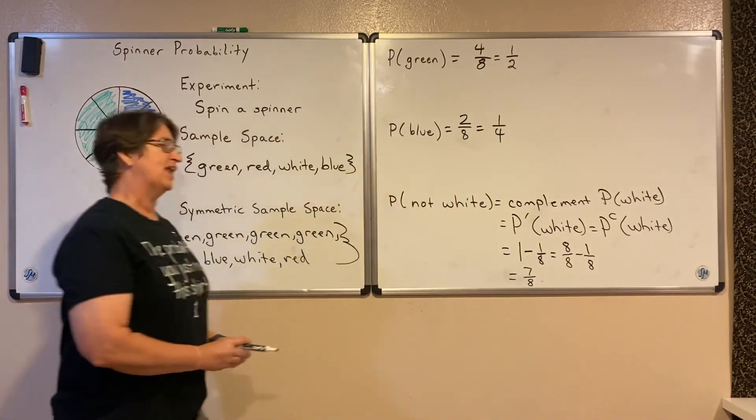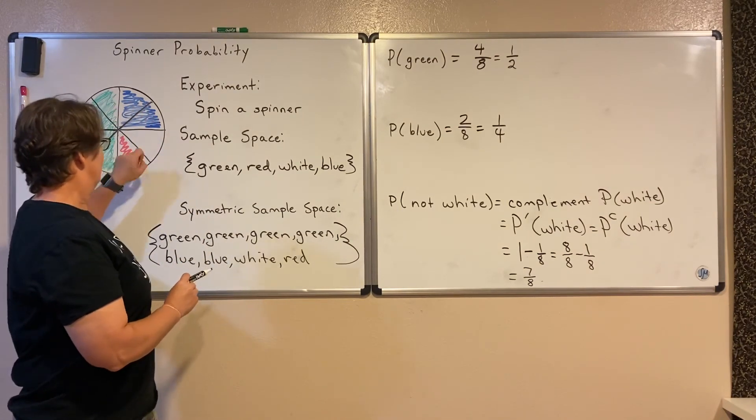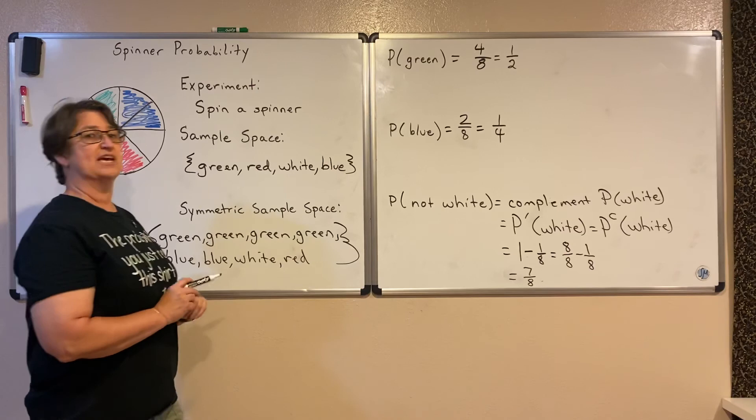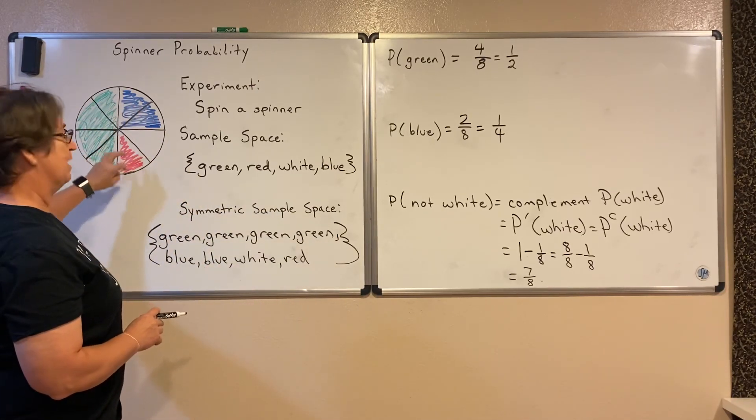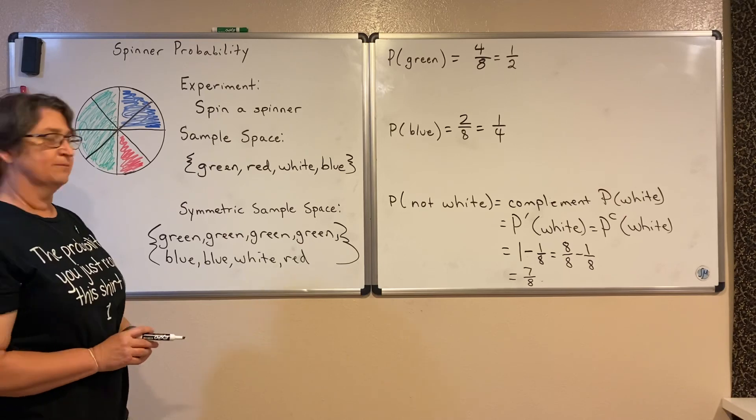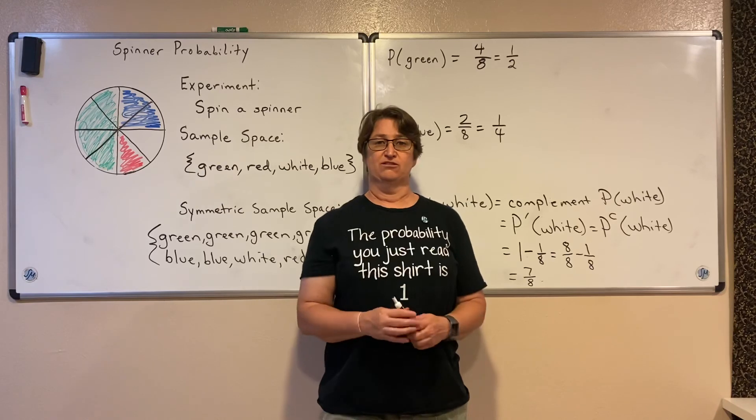So the probability that I get not white is seven out of the eight pieces, which we can see again that the area of my circle is seven out of the eight pieces are not white. So there's a little bit on finding probability using this spinner.